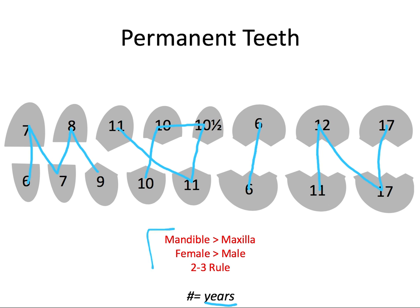Some other general facts great for eruption: mandibular teeth usually erupt before maxillary teeth. Generally, teeth in females erupt earlier than those same teeth in males. In both males and females, tooth eruption should occur symmetrically in both jaws — so if you have a lower left first premolar erupting, that lower right first premolar should also be erupting or within a couple months of erupting. If it's not, then we're suspecting maybe the tooth is missing, impacted, or something else is going on.